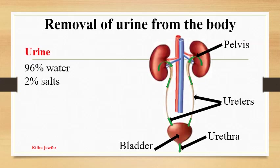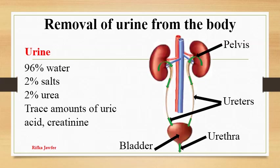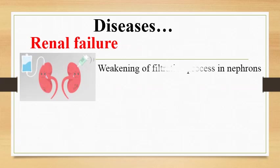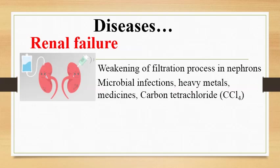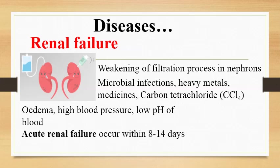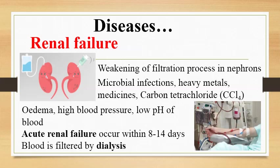Urine contains 96% water, 2% salts, 2% urea and trace amounts of uric acid and creatinine. Renal failure: Kidneys fail to function due to weakening of the filtration process in the nephrons. The main causes are infections by microbes, heavy metals like mercury and arsenic, medicines and carbon tetrachloride. The symptoms are edema and high blood pressure due to accumulation of salts, and as a result the pH of the blood will decrease. Acute renal failure may occur within 8–14 days if immediate treatment is not given. Blood is filtered through a machine by dialysis if such acute renal failure takes place.